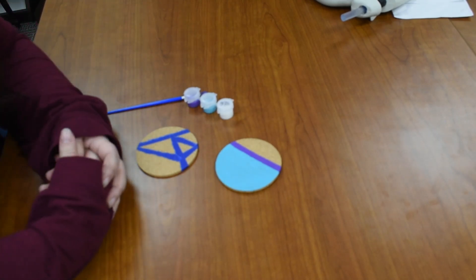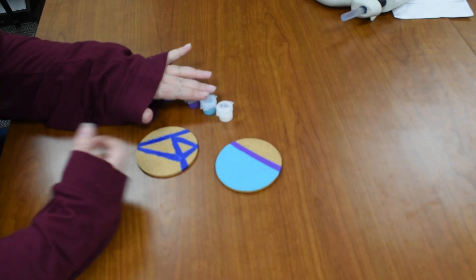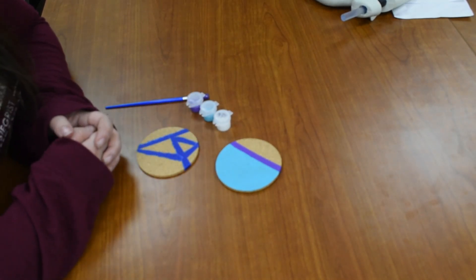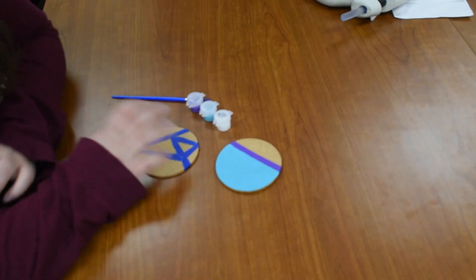For this you'll need the kit, and the kit will include paint, Mod Podge, which is labeled with an MP, a paintbrush, and you'll get one coaster.